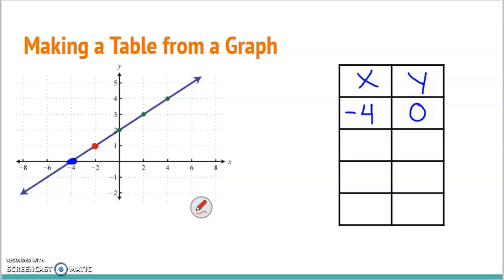Next, I keep going up to this point here. We went over to -2 and up to 1. Then I keep going right here at my y-intercept. I went over 0 and up to 2. And then I'd have my next point. I went over 2 and up 3.